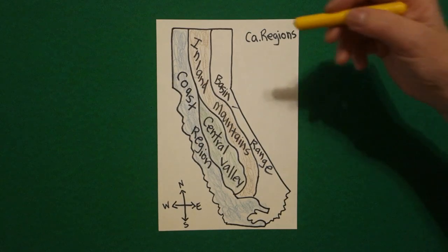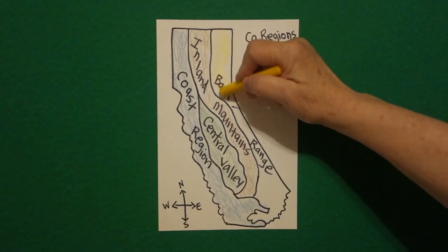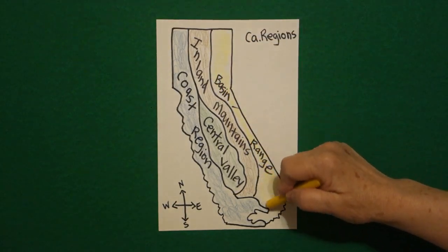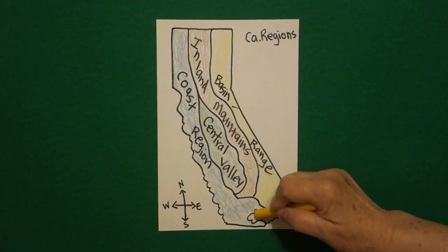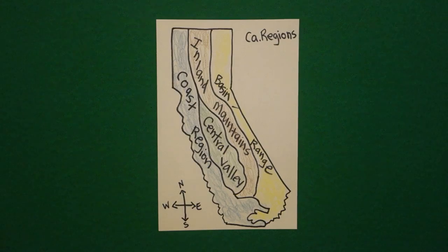And finally, the basin range. Start at the top. All the way down. This is where Death Valley is down south. Okay. Let's see what this looks like all colored in.